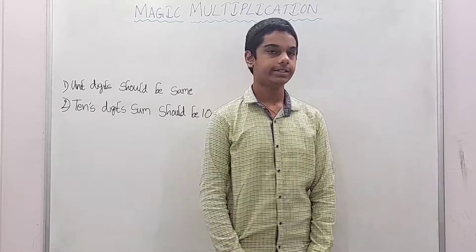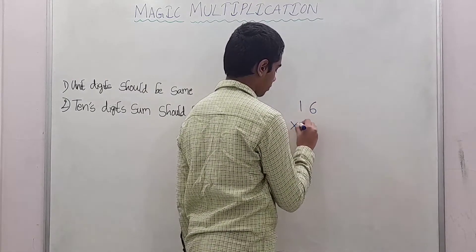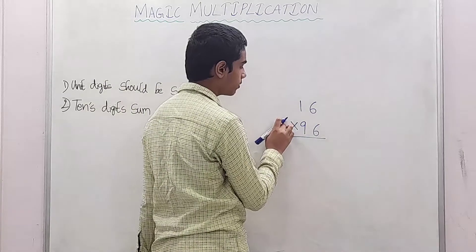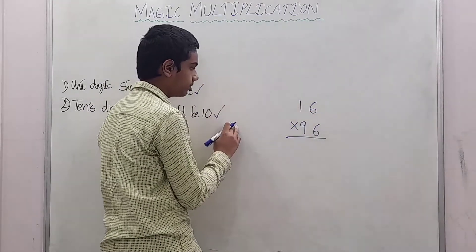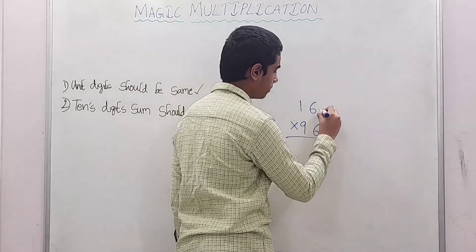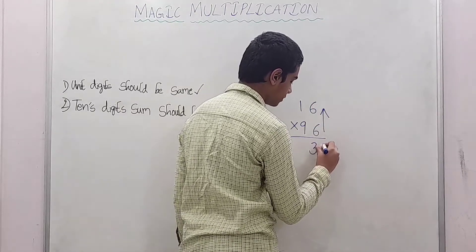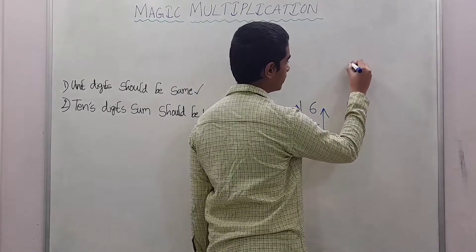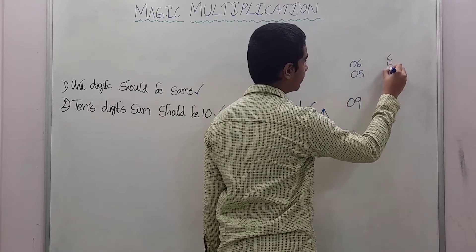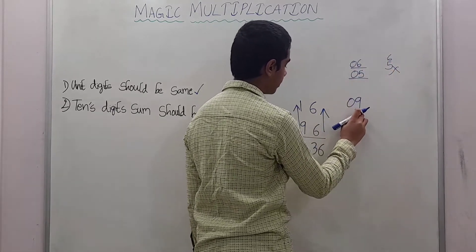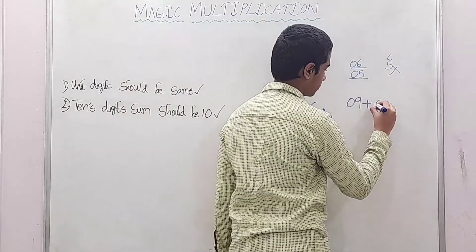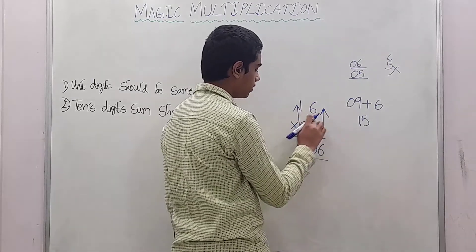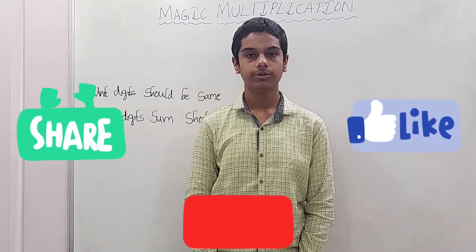55 into 55 is 3025. Let's take the last example: 16 into 96. First rule, unit digits 6 and 6 — satisfied. Second rule, 10th place digit sum: 9 plus 1 equals 10 — satisfied. First step: multiply unit place digit numbers — 6 into 6 is 36. Come to the 10th place: 9 into 1 is 9 — you should always write 09. If you get 6, write 06; if you get 5, write 05. Simply writing 6 or 5 will give a wrong answer. So 09 plus unit place digit down number 6: 09 plus 6 is 15. So write 15. Therefore, 16 into 96 is 1536.